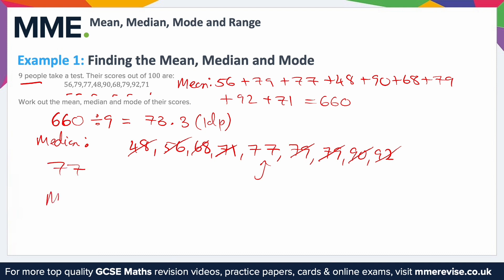Finally, the mode. That's easiest to find from our ordered list, because the mode is the one that appears most often — there has to be more than one appearance of it. Looking through, there's only one 48, one 56, one 68 and so on, until you get to 79 where there are two of them. Whereas everything else appears only once, so the mode must be 79.